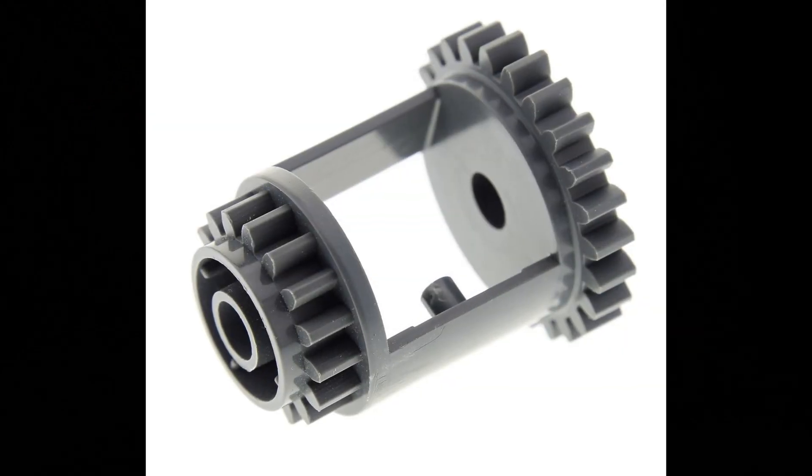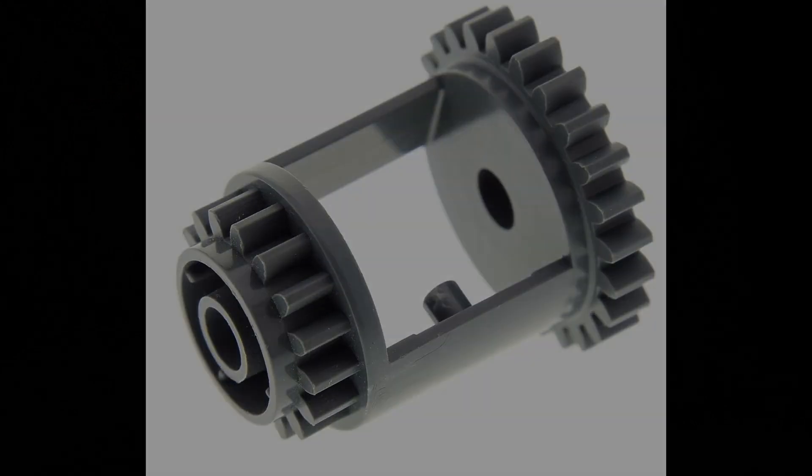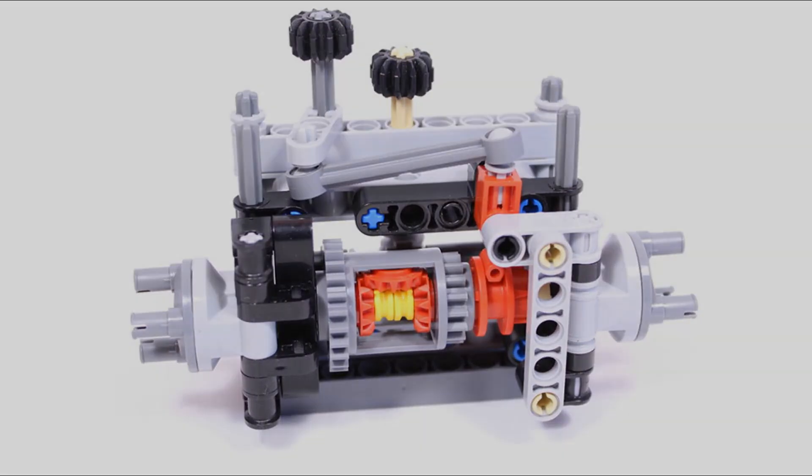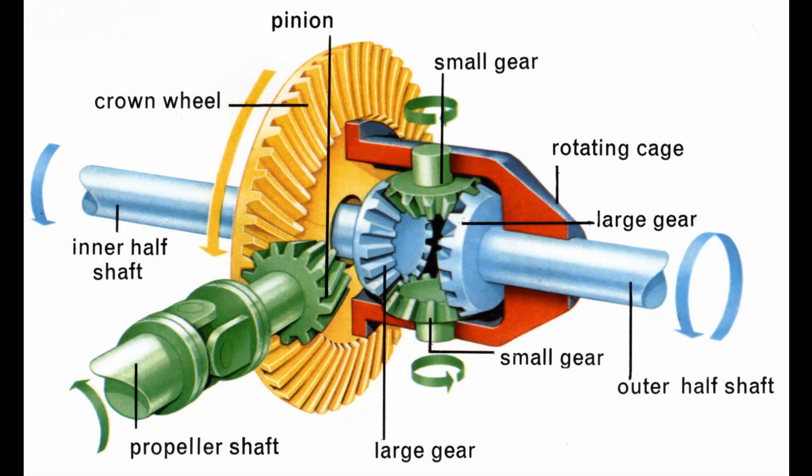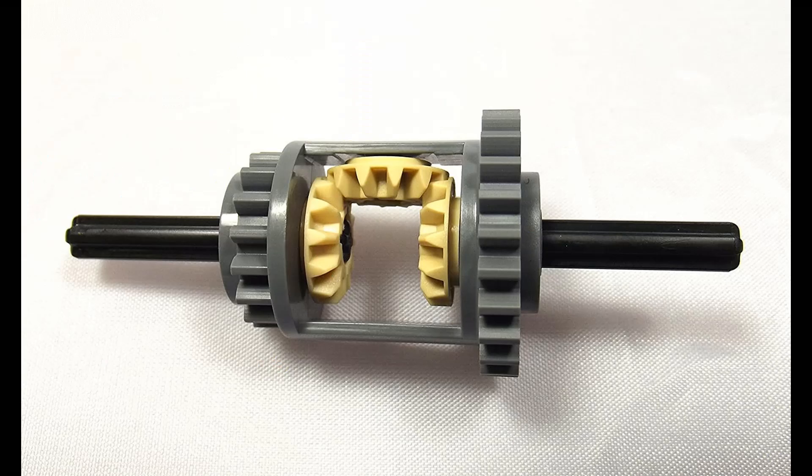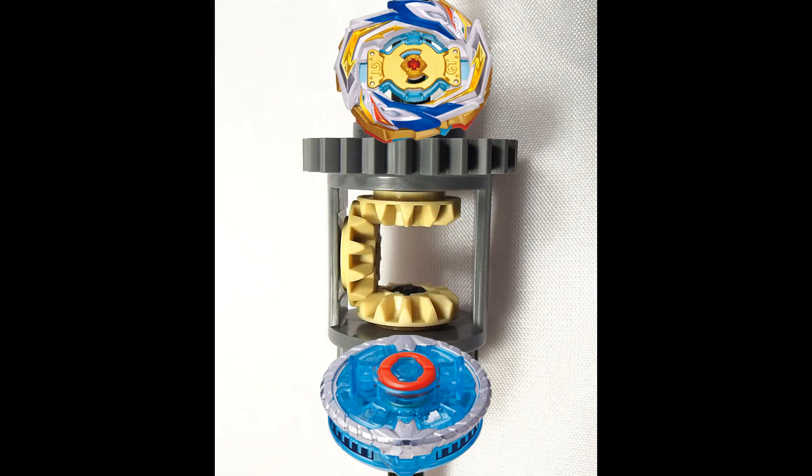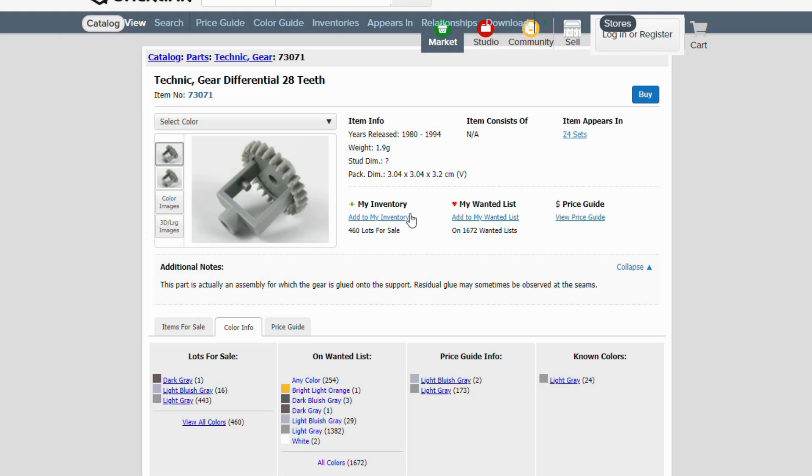The gear differential is a piece which only a handful of people would know. Its main usage is to be used as a mechanism to steer vehicles by applying more torque to one wheel than the other. But miraculously, this three-gear setup is the exact one I needed for the ignition driver. And by sheer luck, I found it online and bought it with the rest of my LEGOs.